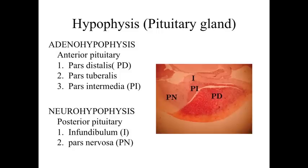The adenohypophysis has a dark staining appearance and a distinct cellular appearance. It's very different from the neurohypophysis. The neurohypophysis is the posterior pituitary. If we take a look at the image on the right-hand side of the slide, the posterior pituitary is that paler staining region labeled with I for the infundibulum, the stalk coming down from the hypothalamus, as well as the pars nervosa, labeled PN on the diagram to the right-hand side.